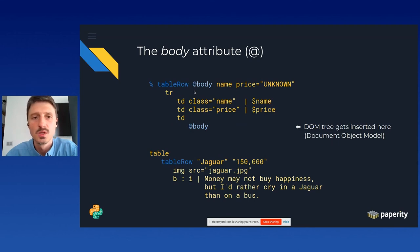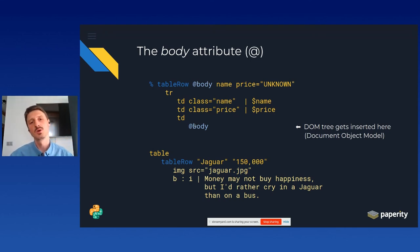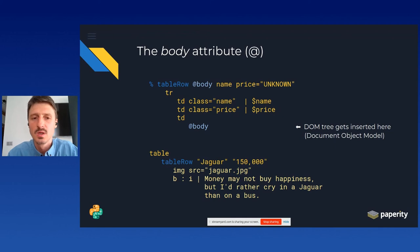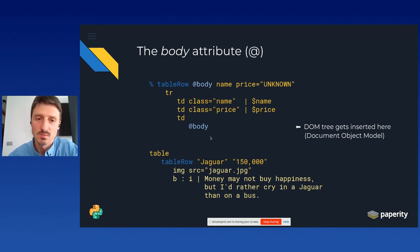Here we want to extend the initial example: we had a table with two columns — car name and price. Now we want to add a third column containing rich text — structured information with styled quotes and images — not just a single atomic value. That's where the ability to provide a body to a custom tag plays a role. To handle that, we define a special body attribute using the at-sign, which marks the first attribute as a body attribute carrying the document tree of the actual body.